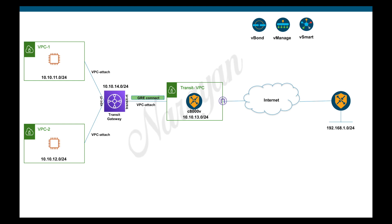In the previous videos, we looked at using AWS Transit Gateway VPN connection to extend our SD-WAN fabric. In this video, we will look at using TGW Connect attachment which leverages GRE and provides higher bandwidth per tunnel.